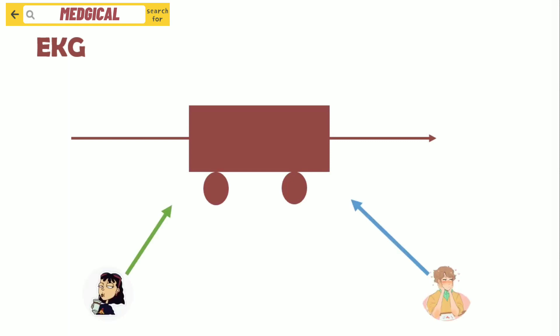Now let's talk about the reasons why some leads have negative deflections and some have positive deflections of R wave. For example, we have a car moving on the street watched by Anna and Mark. From Anna's point of view, she sees the car moving away from her, but Mark says the car is moving towards him. They both are correct — it's just because of their different positions.